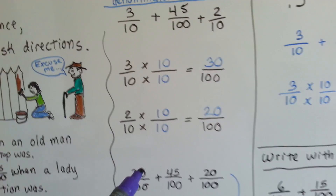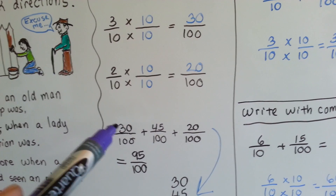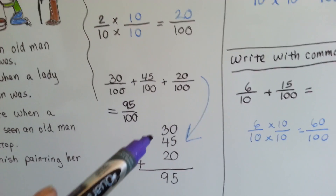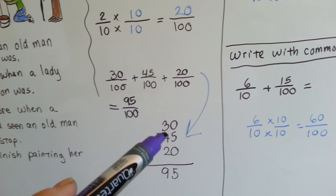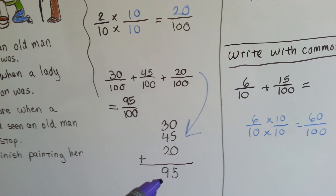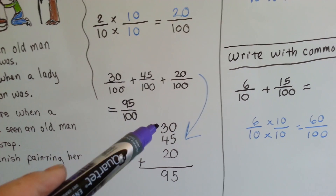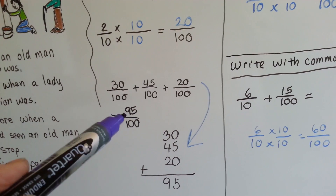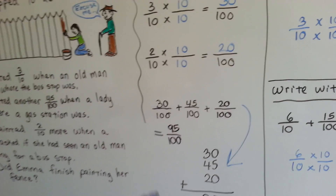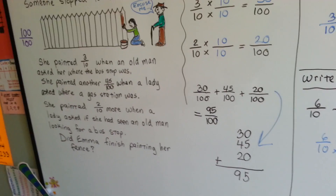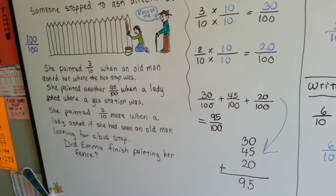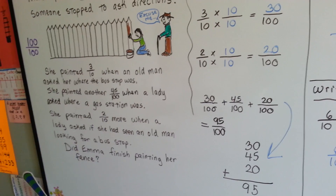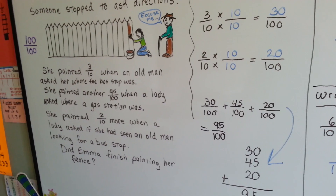Now we can add all these hundredths. We've got 30 hundredths, 45 one-hundredths, and 20 one-hundredths. 30 and 45 and 20 equals 95, so we have 95 one-hundredths. She got so close — she didn't quite finish painting the fence. She was five one-hundredths away from finishing.